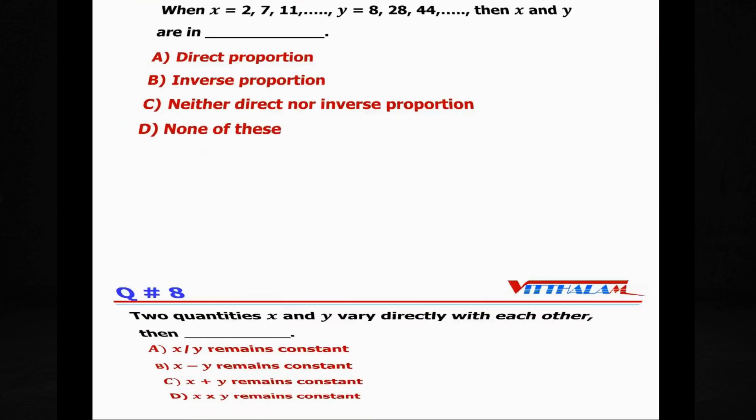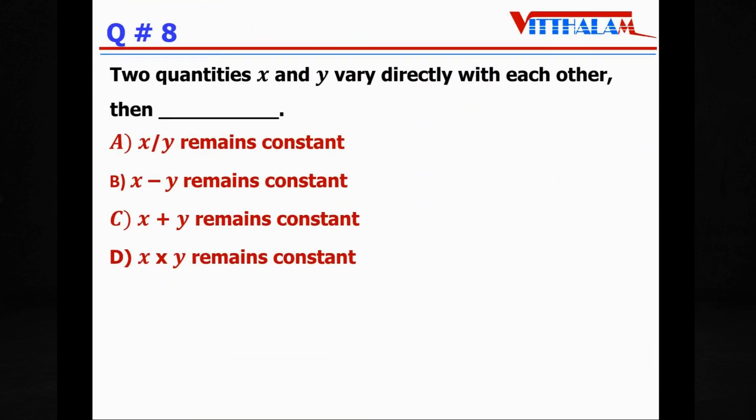Question 8: Two quantities x and y vary directly with each other when? Directly means x ∝ y, therefore x/y is constant. So x/y remains constant. This is for inverse. And this has no value.